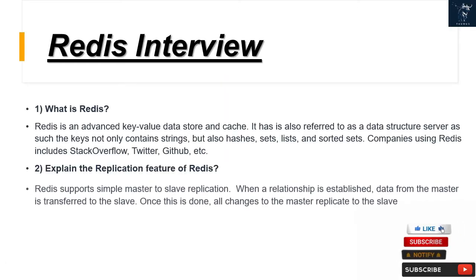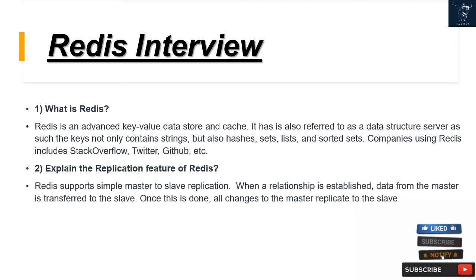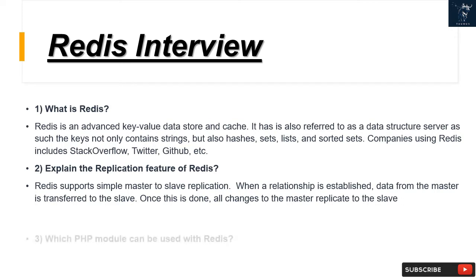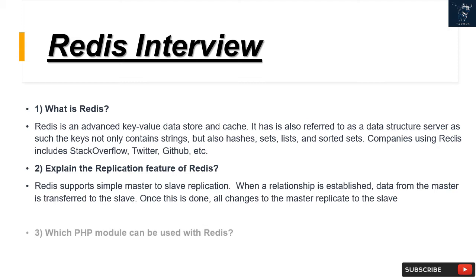Question 1: What is Redis? Redis is an advanced key-value data store and cache. It is also referred to as a data structure server, as the keys not only contain strings but also hashes, sets, lists, and sorted sets. Companies using Redis include Stack Overflow, Twitter, GitHub, etc.